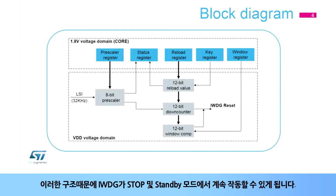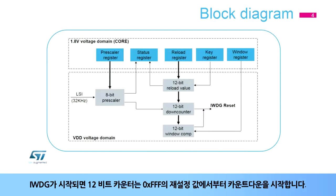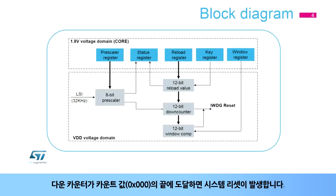This architecture makes it possible for the IWDG to continue operating in stop and standby modes. The 8-bit pre-scaler is used to divide the LSI oscillator frequency. When the IWDG is started, the 12-bit counter starts counting down from the reset value of 0xFFF. To refresh the IWDG counter, the key value 0xAAA must be written in the key register to reload the counter value. If the down-counter reaches the end of the count value, 0x000, a system reset is generated.